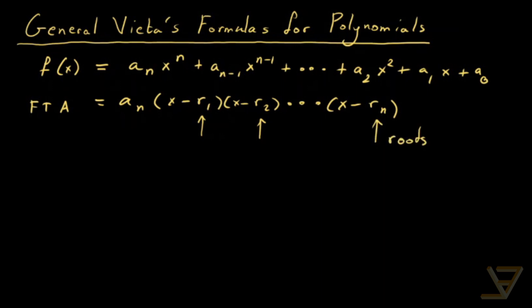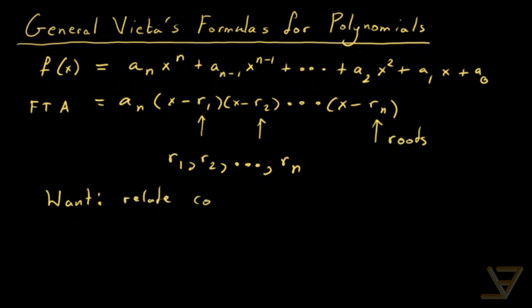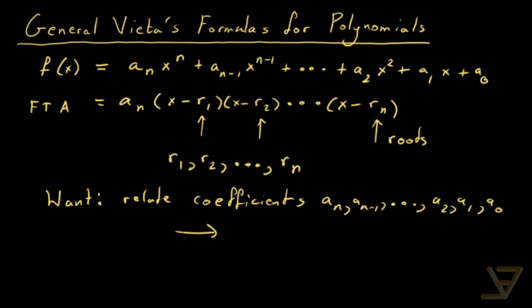Some of the roots might repeat, in which case we say the multiplicity is greater than 1. When we write them out, the roots are r_1, r_2, all the way through to r_n, and we include the repeats — sort of like in a multi-set instead of a set. What we want to do is relate the coefficients a_n, a_{n-1}, through a_2, a_1, a_0 to the roots r_1, r_2, through r_n, by creating equations that relate them together.